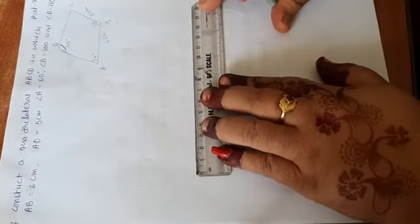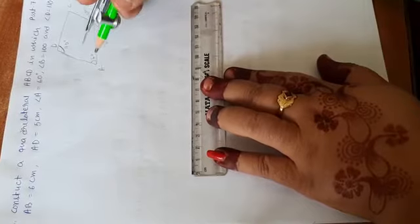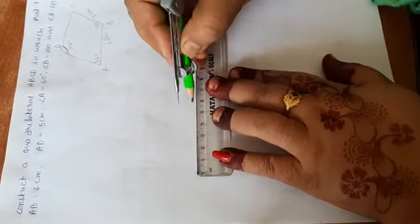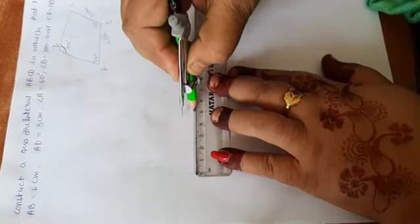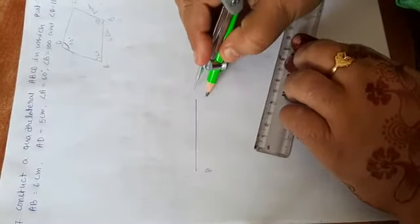Now I am going for final figure. First we draw AB line segment whose length is 6 cm. It is A and B, length is 6 cm.